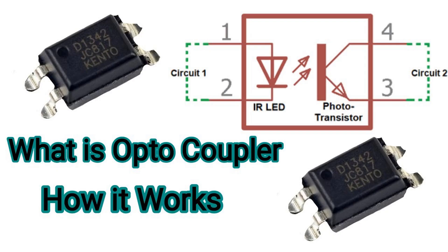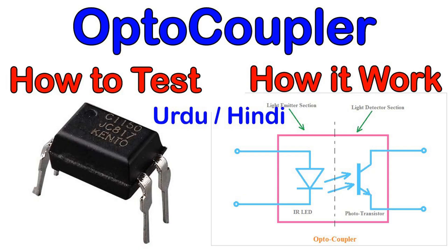Isolation, in the context of an optocoupler — also known as an optoisolator or photocoupler — refers to the electrical separation between the input and output sections of the device. This isolation is achieved through the use of an optical barrier that physically separates these two sections while allowing the transmission of light. The optical barrier is typically a gap or a transparent/translucent material that prevents direct electrical contact between the input and output sections.